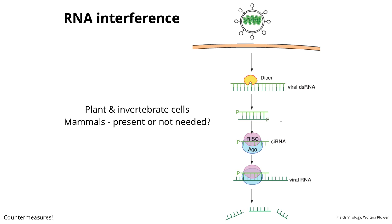In plant and insect cells, viruses have countermeasures to avoid the RNAi pathway—for example, viral proteins that inactivate the effectors of the RNAi response, or proteins that bind RNA to protect it from being chopped up. At every level, there's an antagonism or countermeasure.